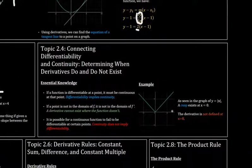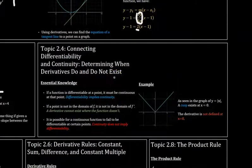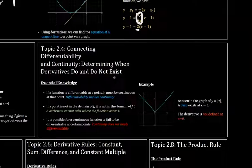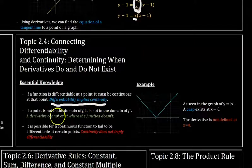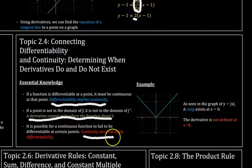So topic 2.4 is about how differentiability and continuity are connected. And differentiability just means like whether you can differentiate a function. So there are three key phrases to remember. Differentiability implies continuity. A derivative cannot exist where the function doesn't. And then continuity does not imply differentiability.